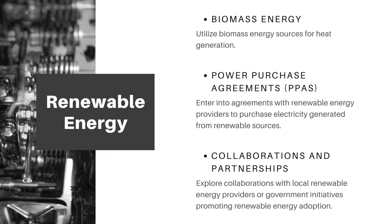Renewable energy used during the die casting process can help reduce greenhouse gas emissions and dependency on fossil fuels. Firstly, we can use biomass energy for heat generation. Biomass boilers can burn organic waste materials such as wood chips, sawdust or agricultural residues to generate heat for melting the metal.